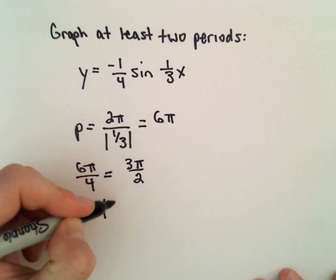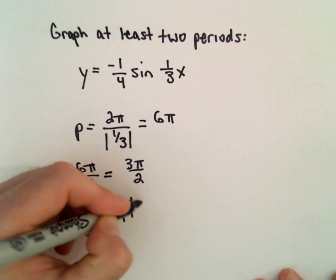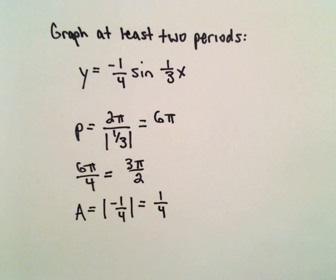The amplitude, we'll just take the absolute value of negative one-fourth, and that'll give us positive one-fourth.